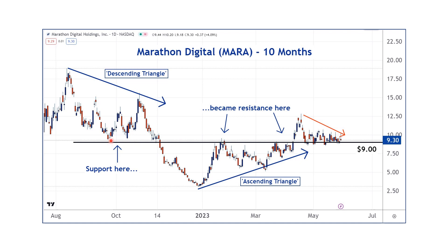So remember, buyer's remorse can turn support into resistance. Seller's remorse can turn resistance into support. We see this on a lot of charts regardless of the security — ETFs, stocks, cryptos, you name it. Why is it important to know? Well, if a market's trending higher and you have a position and you're wondering where should I sell this, if you look into the past and find a level that had been previously support or resistance, there's a good chance there's going to be resistance there again. So that would be a logical place to place your sell order — that would be your target.